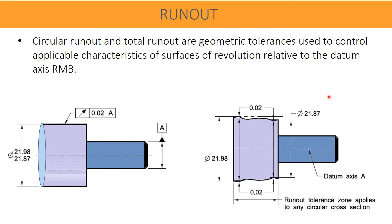In this figure we can have the detailing of the specified controls on the drawing. A is the datum axis, the smaller diameter. The axis of that becomes datum axis A. Here the minimum diameter and maximum diameter are shown, and the tolerance of the runout is 0.02 mm. Runout tolerance zone applies to any circular cross-section.